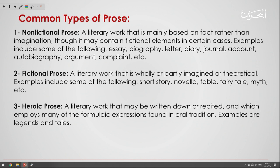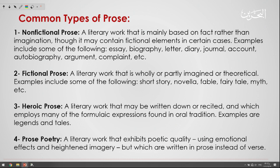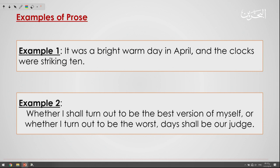The third type is the heroic prose — a literary work that may be written down or recited, and which employs many of the formal expressions found in oral tradition, like legends and tales. In our culture, we also have legends and tales that reflect the heroic prose. The fourth type is prose poetry — a literary work that exhibits poetic quality using emotional effects and heightened imagery, but which is written in prose instead of verses.